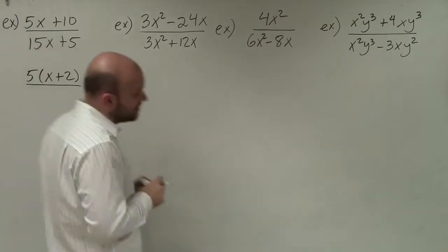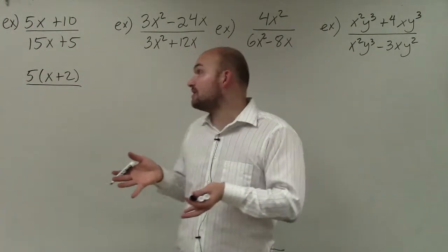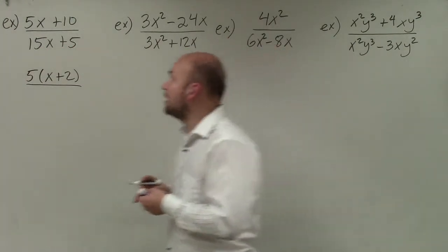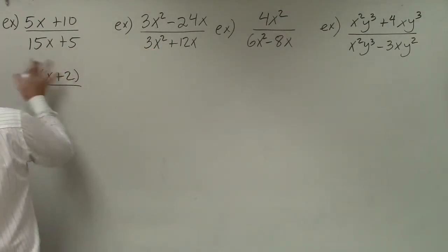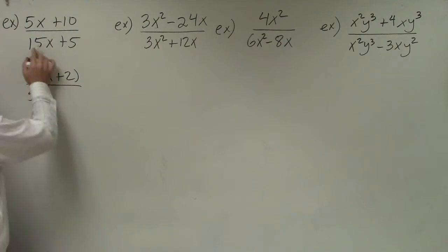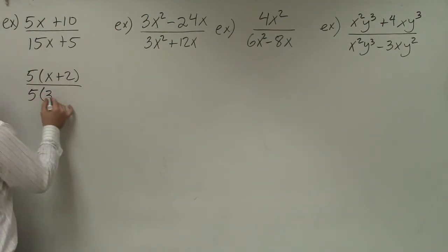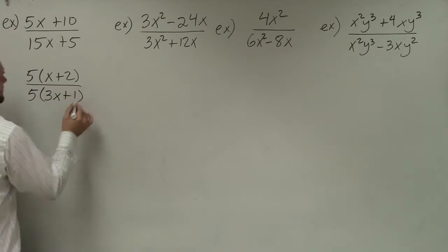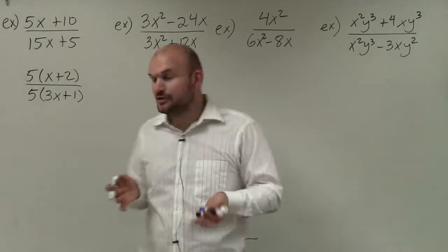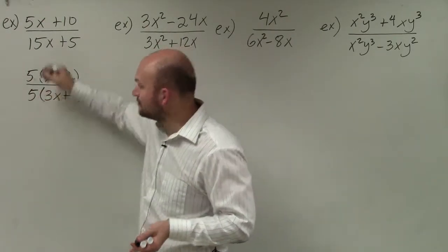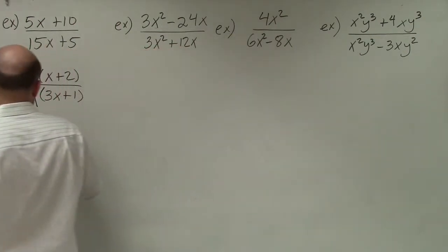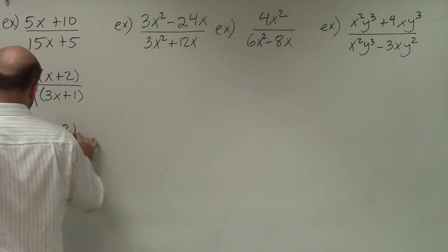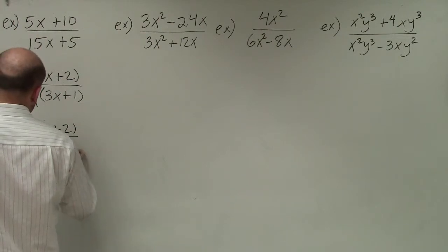In the denominator, they also both share a 5, so when I factor out a 5 — essentially dividing it out — 15x factored by 5 leaves me with 3x plus 1. Now, by simplifying using the division property, I see that I have 5 over 5, which divides to 1. Therefore, I'm just left with the final answer of x plus 2 over 3x plus 1.